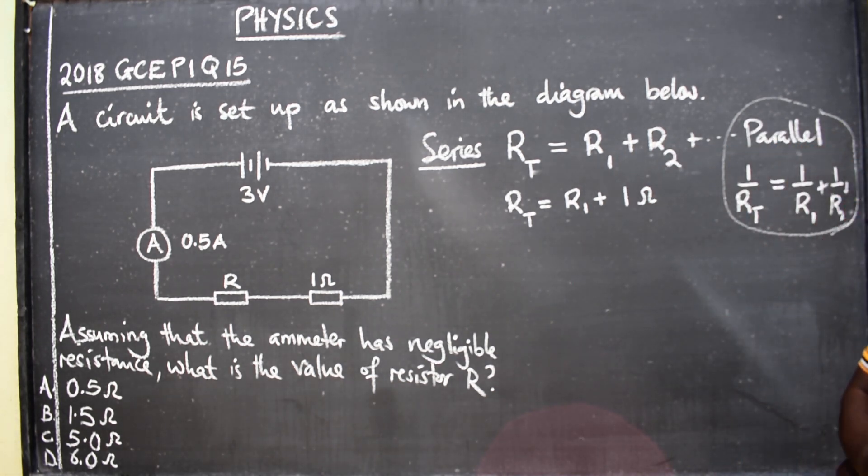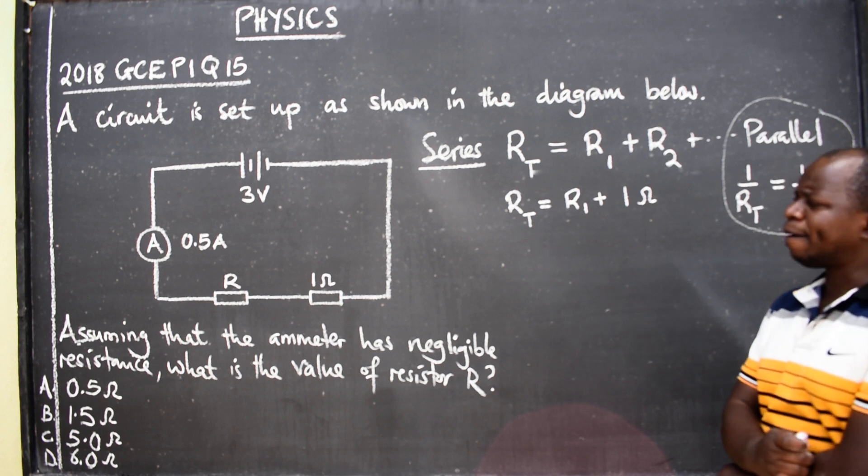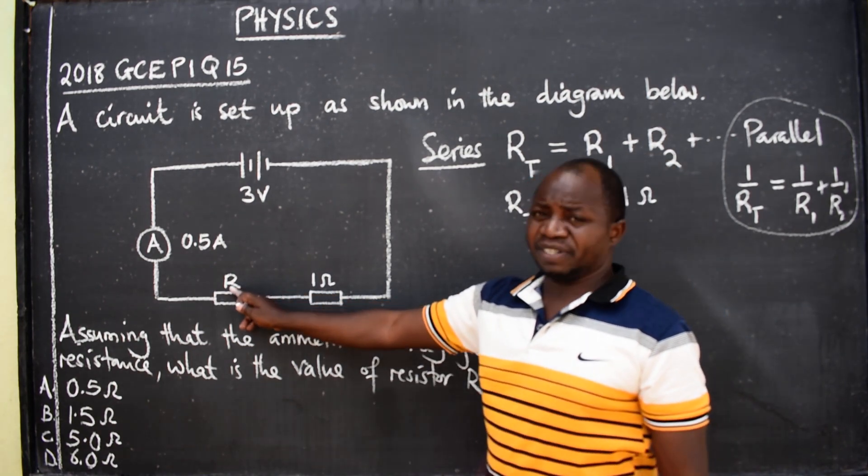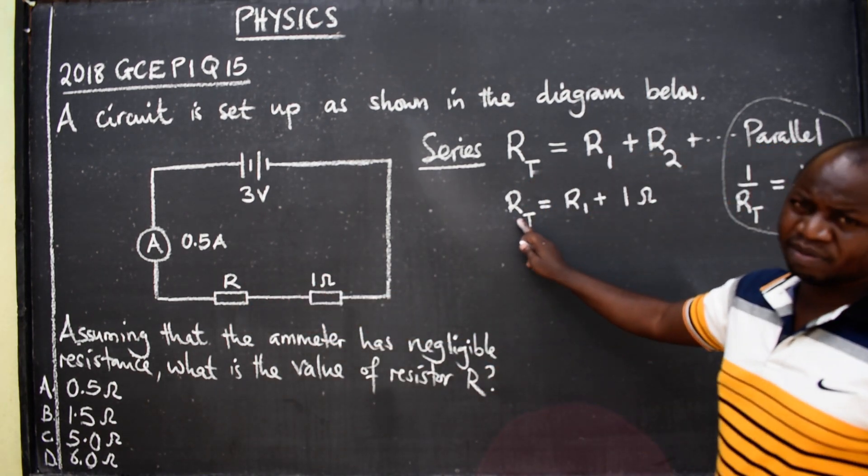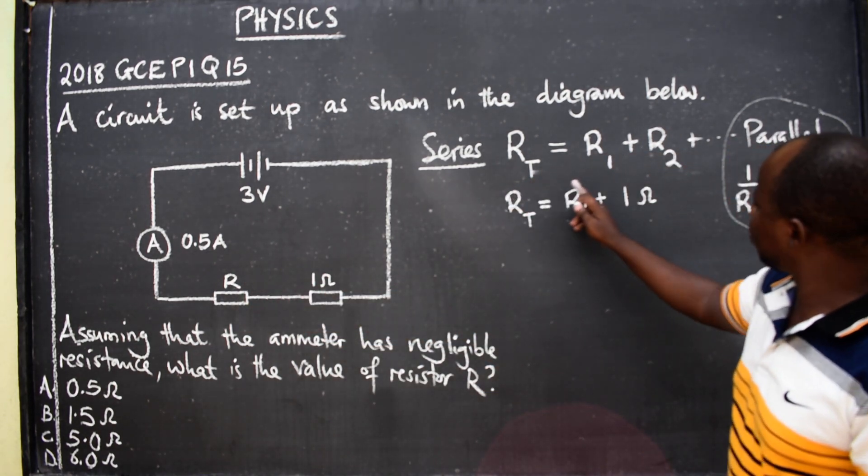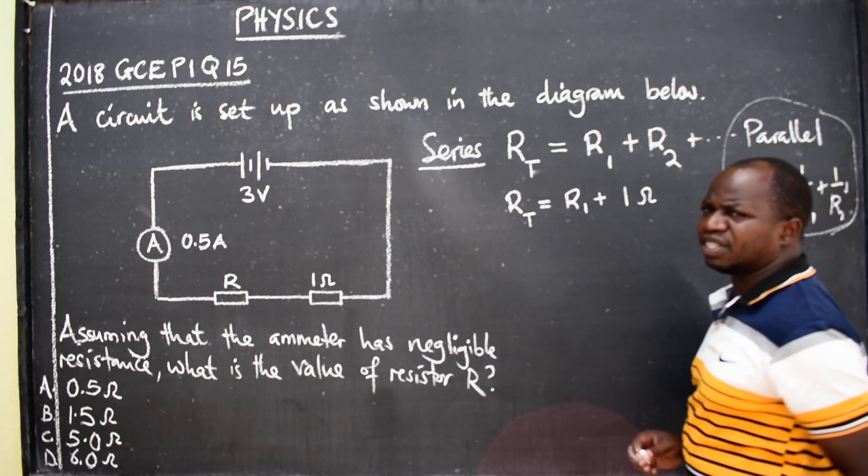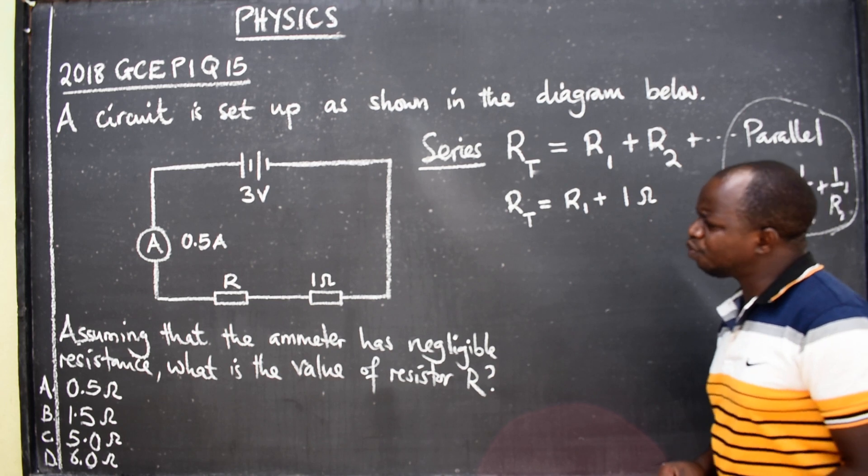Now there are two things that we need to find here: Resistor 1, which is this one, and the total. In this equation, for the equation to be used, we need to find the total resistance here. How do we go about it?